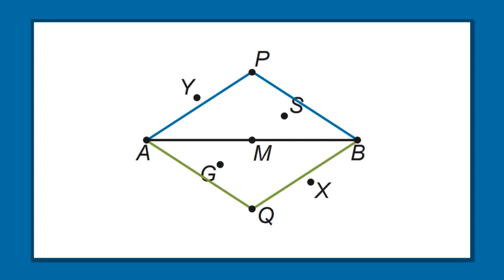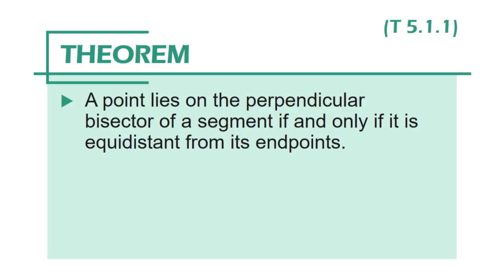We could draw other points that are equidistant from both A and B. If all of those points were drawn, they would appear to form a line that appears to be the perpendicular bisector of segment AB. But we can't just make conclusions in geometry because a diagram looks a certain way. We have a theorem, however, and that theorem does allow us to draw this conclusion.